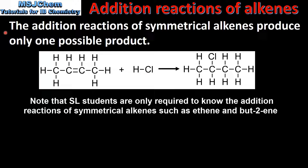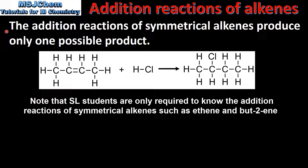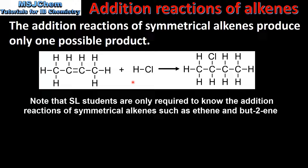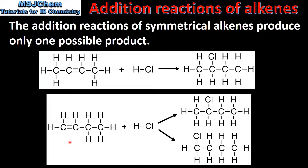Finally we look at the difference between the reactions of symmetrical and unsymmetrical alkenes. The addition reactions of symmetrical alkenes produce only one possible product. Here we have but-2-ene, which is a symmetrical alkene, reacting with hydrogen chloride. The only possible product of the reaction is 2-chlorobutane. Next we have the reaction of but-1-ene, which is an unsymmetrical alkene.